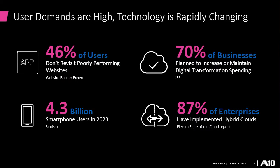Some statistics to back up what we've been talking about: 46% of users don't revisit poorly performing websites. With 5G, there will be a lot more connected devices — one estimate for smartphones is 4.3 billion by 2023, but that's probably just the tip of the iceberg. On the cloud side, 70% of businesses are planning to spend more, and 87% of enterprises have implemented hybrid clouds. These things are reality and not theory today.